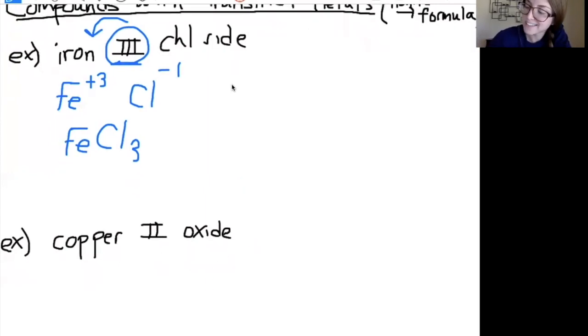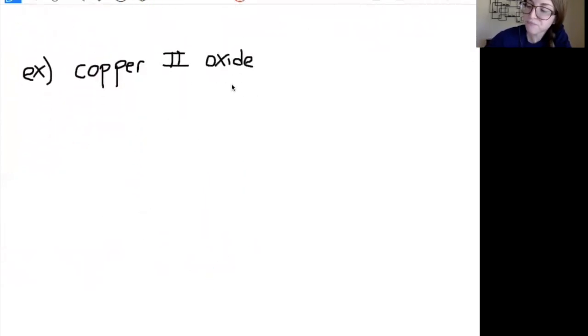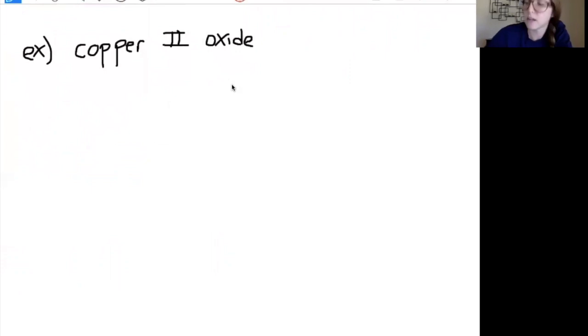Another example for you. Copper two oxide. So again, the Roman numeral is telling me the charge of the copper. Copper as a plus two. And then oxide is the ion of oxygen. I look on the periodic table at the top of the column. It says it's a minus two.